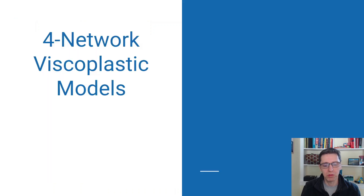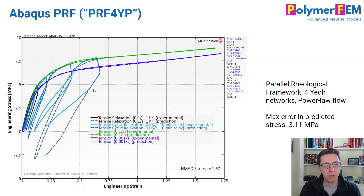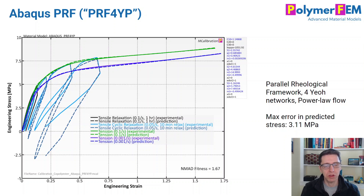How about four-network models? I virtually never use them. In this case, you get an average error of 1.67% but the maximum error is still 3 MPa — it didn't help. That's because the issue with unloading comes from the type of equations used, not the number of networks. You can't fix a bad prediction of residual strain simply by adding more networks.